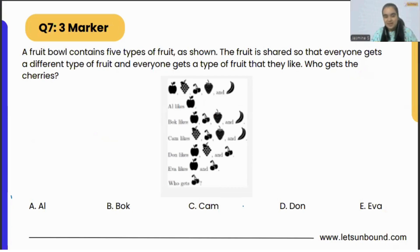Here is the question: A fruit bowl contains five types of fruits as shown. We are having apple, grape, cherry, strawberry, and banana. So which one is your favorite fruit? Let me know in the comments below. From these five, I like grapes the most.